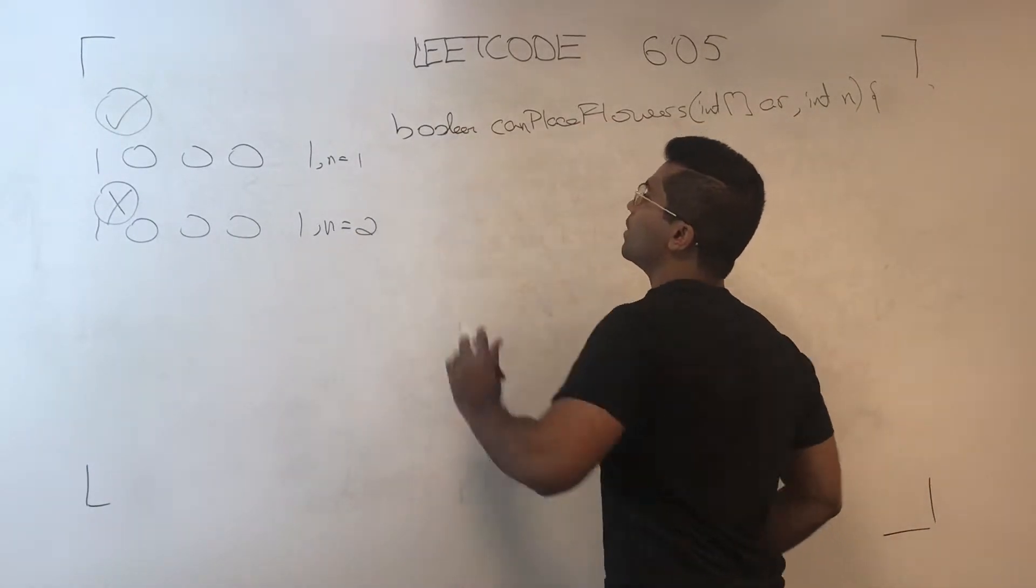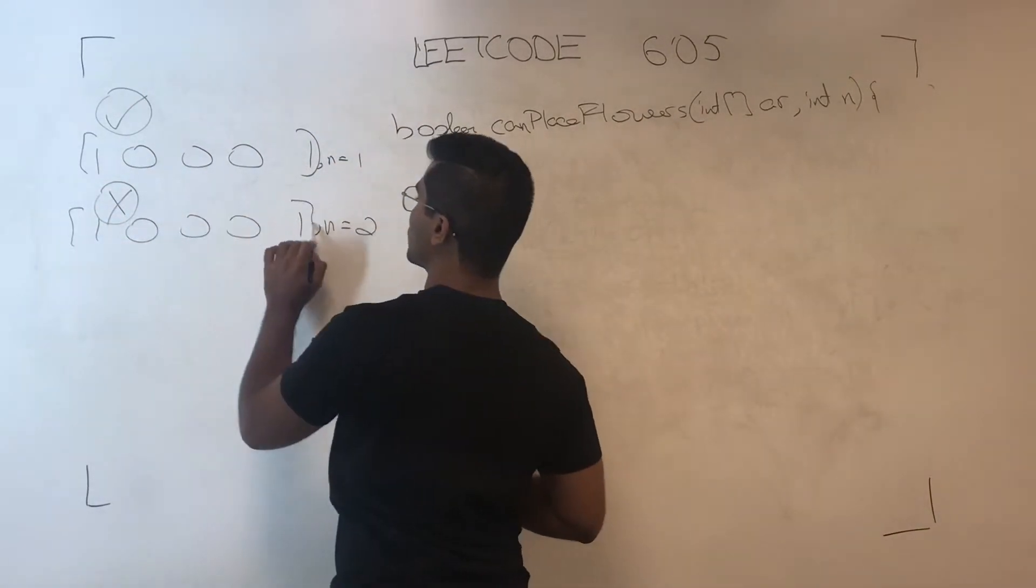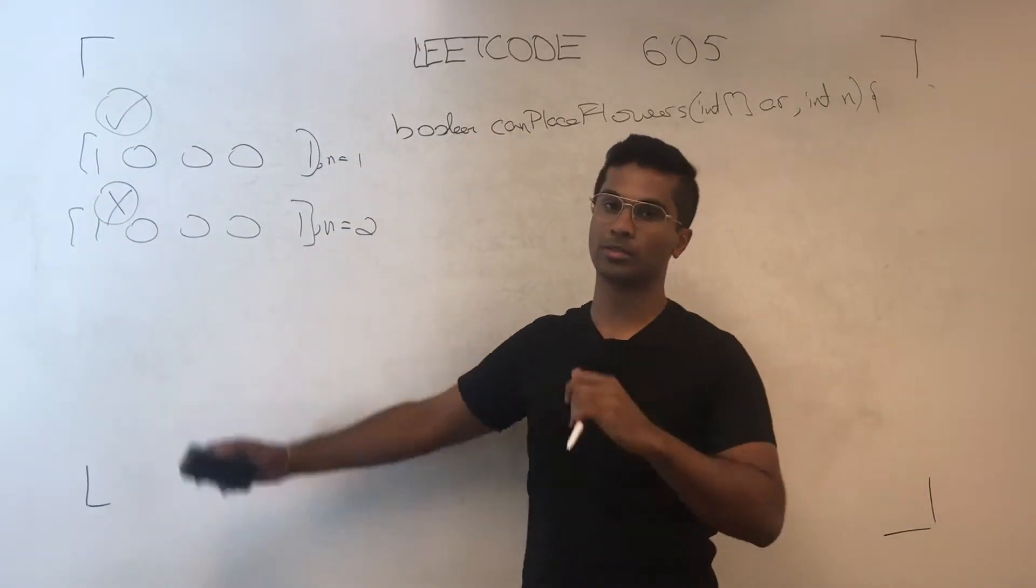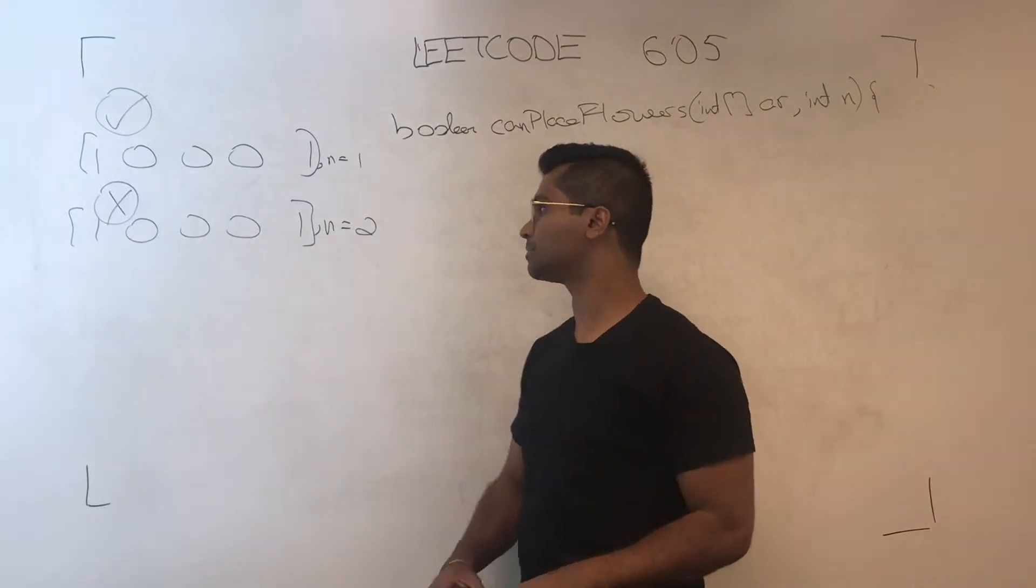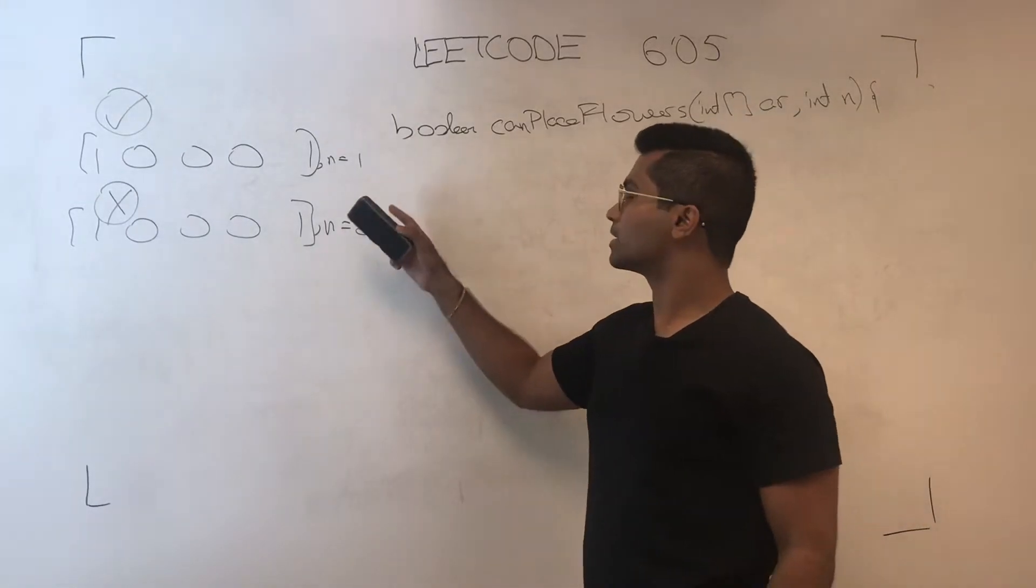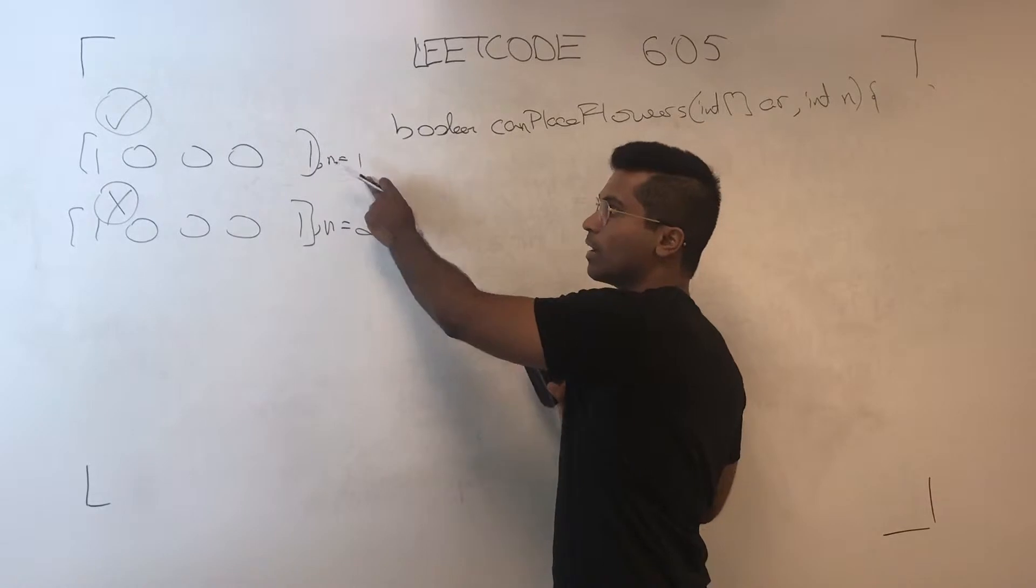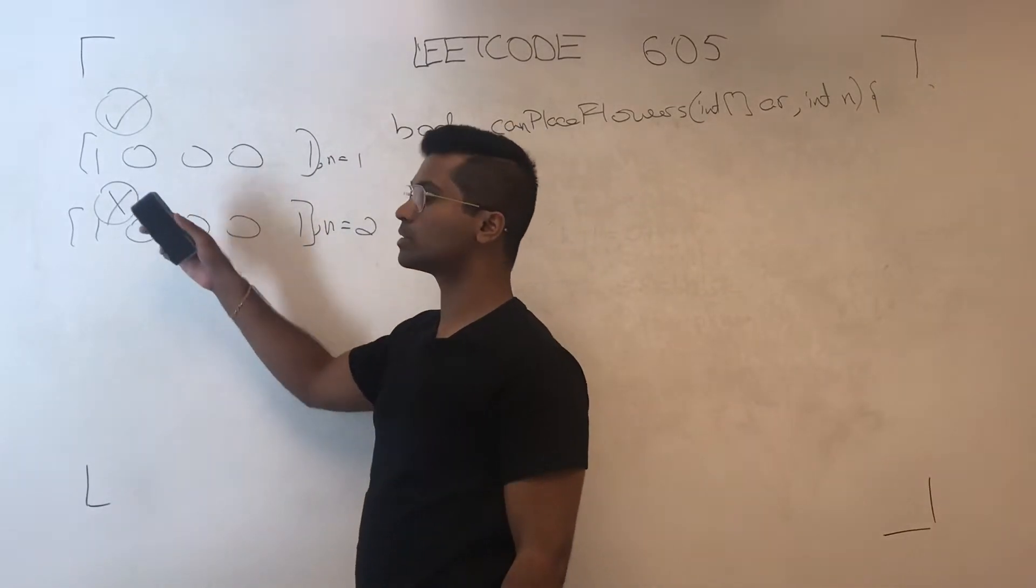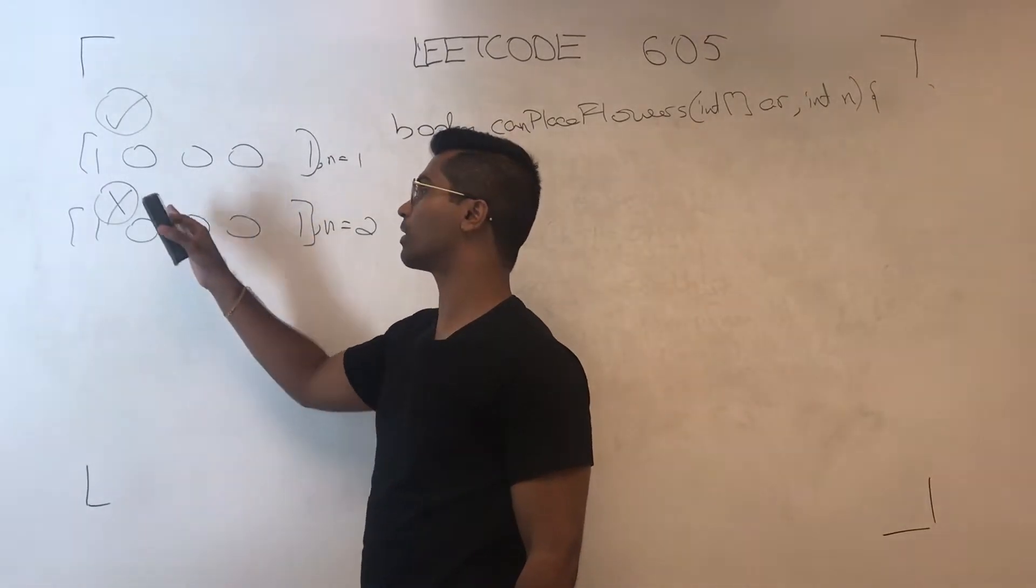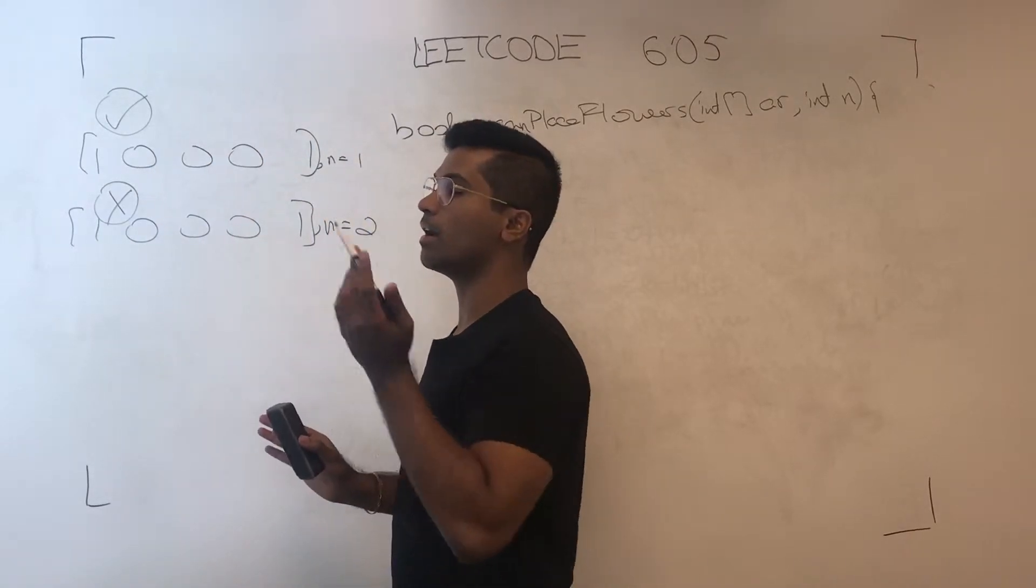Pretty much what the input is going to be is an array of zeros and ones where zero represents an empty spot and one represents a flower. Now, the question asks is, can we plant this many, the n number of flowers such that every flower has at least one space between another flower.